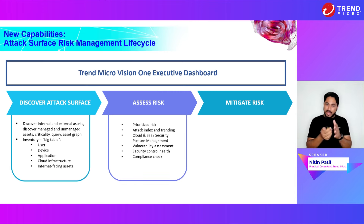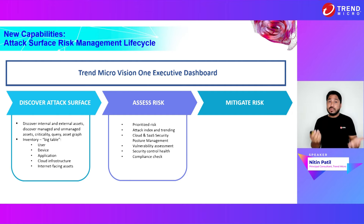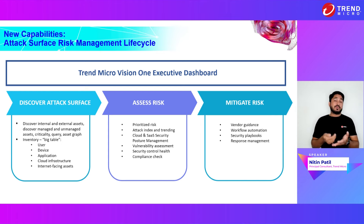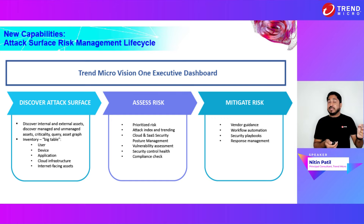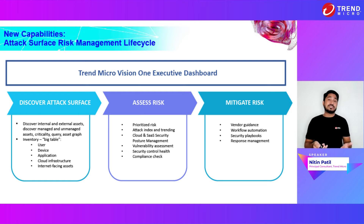Once we have that inventory, we need an assessment of the risk: what is the prioritization for mitigation, what vulnerabilities need to be prioritized, what is the risk score of a user and device, and the health check and security posture of cloud instances. All these things have to be assessed and a risk score created. Finally, you need to mitigate. Mitigation can start from vendor guidance or automation playbooks — for example, if a vulnerability is globally exploited at a very high level, a playbook could be triggered to create and enable a filter that was previously disabled, so you are proactively protected. All this mitigation has to be done through orchestration and response management.